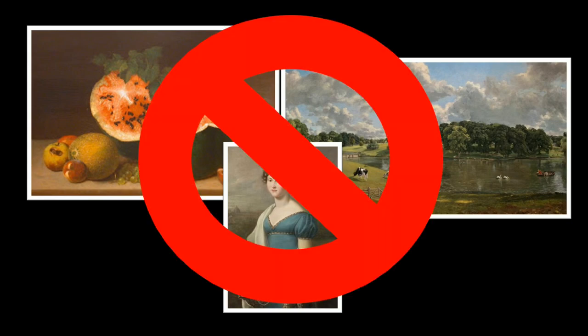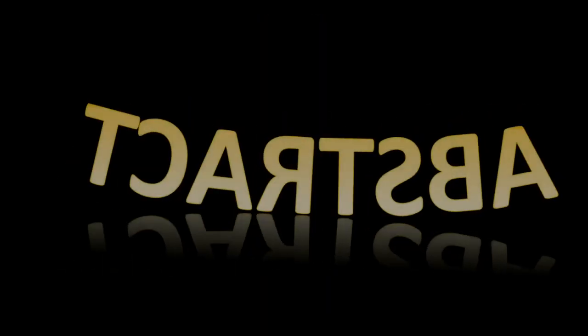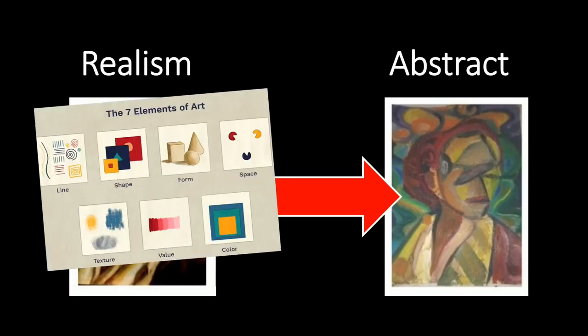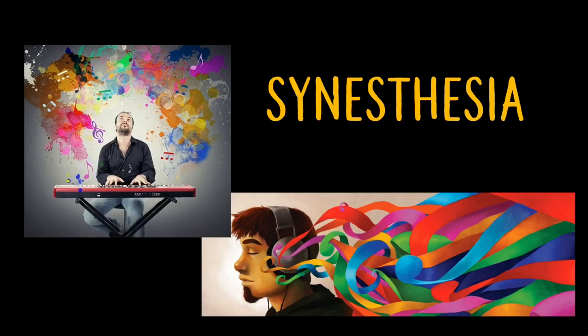His art looked different than the traditional art that artists had been painting before him — his art was abstract. Abstract art does not attempt to look like real life; instead it focuses on the elements of art like shape, color, and texture.